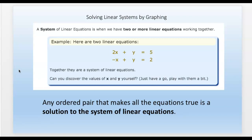Sometimes we use guess and check — we just try different things. For example, 2x + y = 5: if 2 + 3 = 5, then x would be 1 and y would be 3. Checking the second equation: if x = 1, that gives negative 1, and y = 3, so 3 minus 1 = 2. So x = 1 and y = 3 works. That's one way to do it — try different numbers and see if they work.